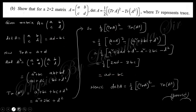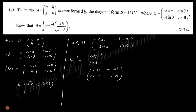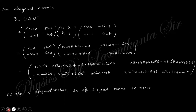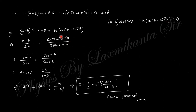Next question: if matrix A is transformed to a diagonal matrix, find θ. A and U are given. Taking the modulus and computing U⁻¹AU, performing this matrix multiplication yields a diagonal matrix. Since it is diagonal, the off-diagonal terms must be zero. Setting the off-diagonal term equal to zero gives the condition for θ. Following this process, you can obtain the value of θ. The calculation is straightforward and you can verify it yourself.